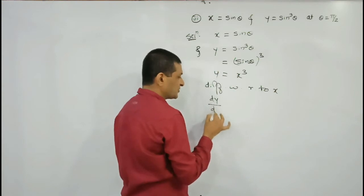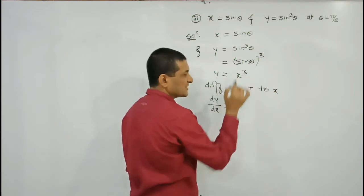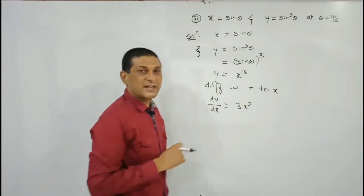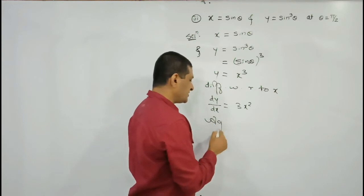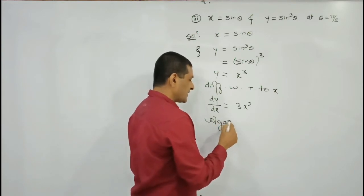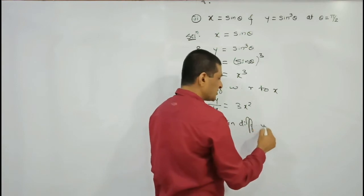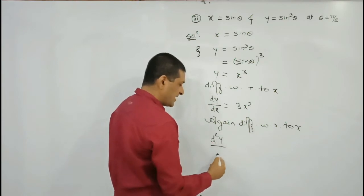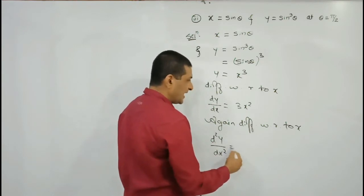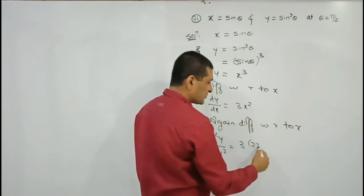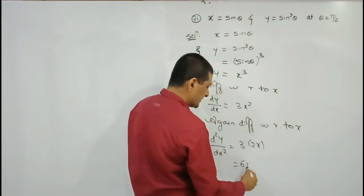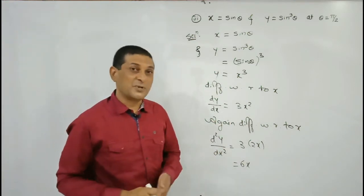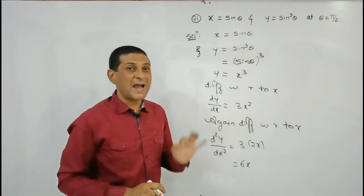Since y = x³ is now an explicit function, we differentiate with respect to x easily. dy/dx = 3x². To find the second order derivative, we differentiate again with respect to x: d²y/dx² = 6x. Now the question asks for the value at θ = π/2, so we need to find the corresponding value of x.